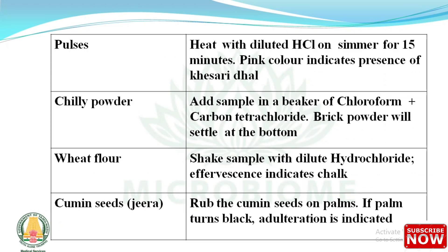Continuing adulteration tests: In pulses — heat with diluted HCl and simmer for 15 minutes; pink color indicates the presence of kesari dal. In chili powder — add sample to a beaker of chloroform plus carbon tetrachloride; brick powder will settle at the bottom. In wheat flour — shake the sample with dilute hydrochloric acid; effervescence indicates chalk. In cumin seeds — rub the seeds on your palms; if the palm turns black, adulteration is indicated.